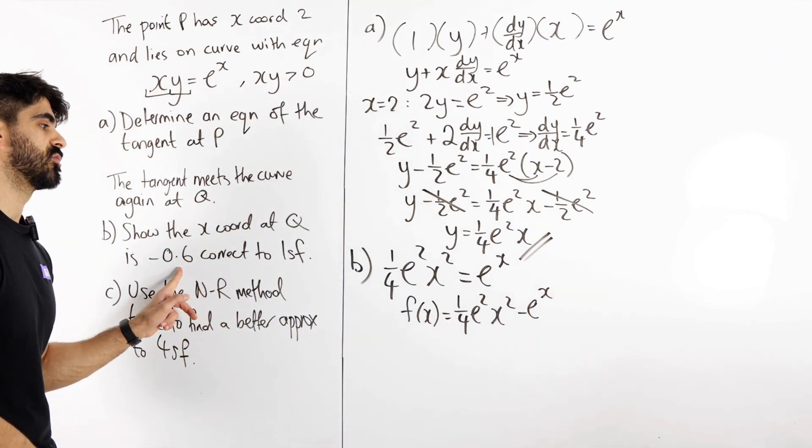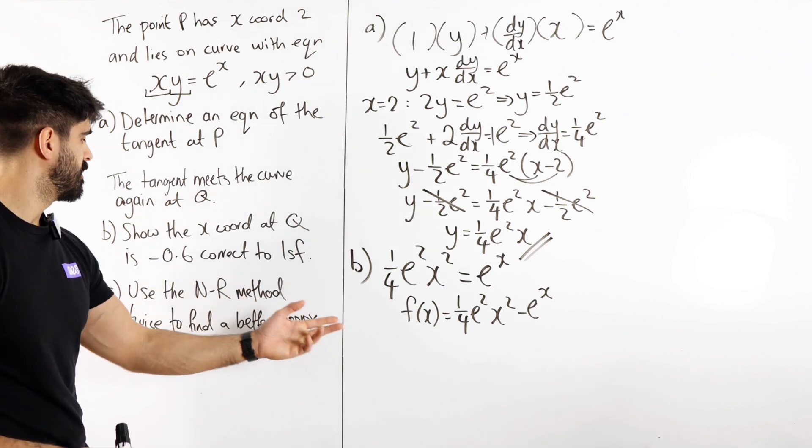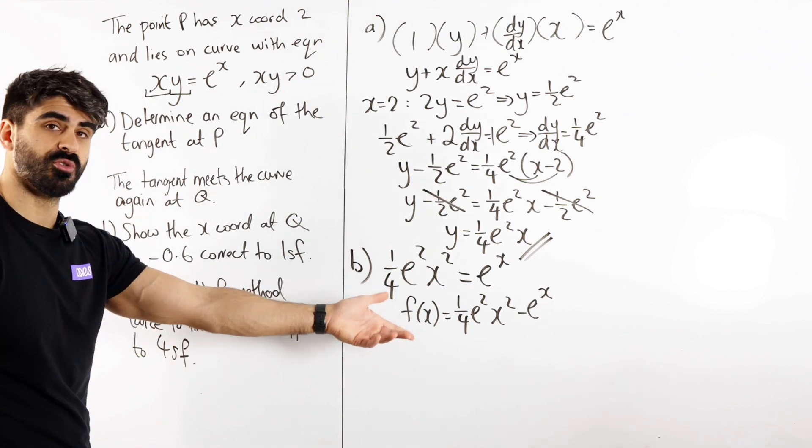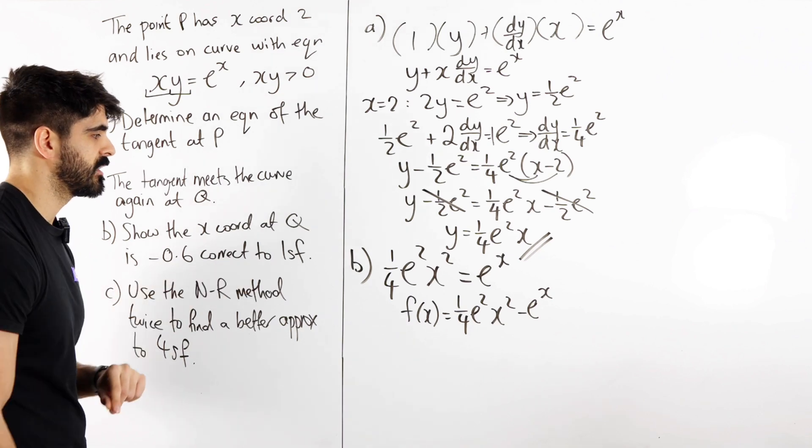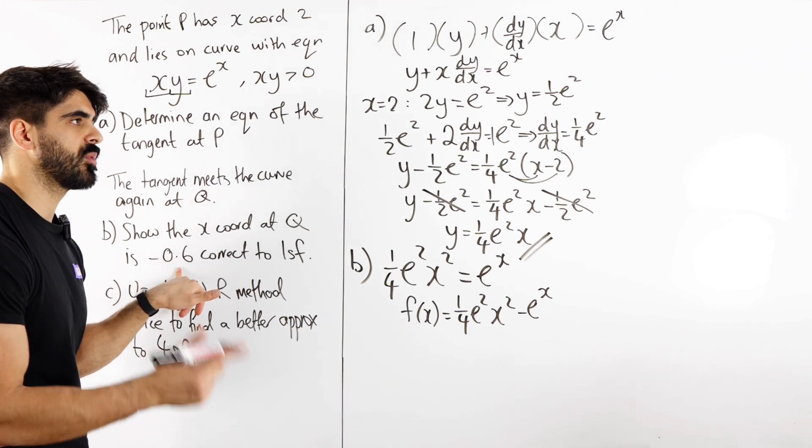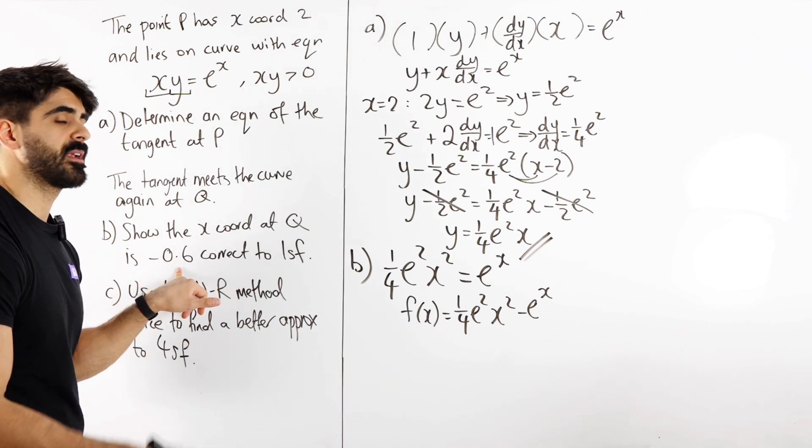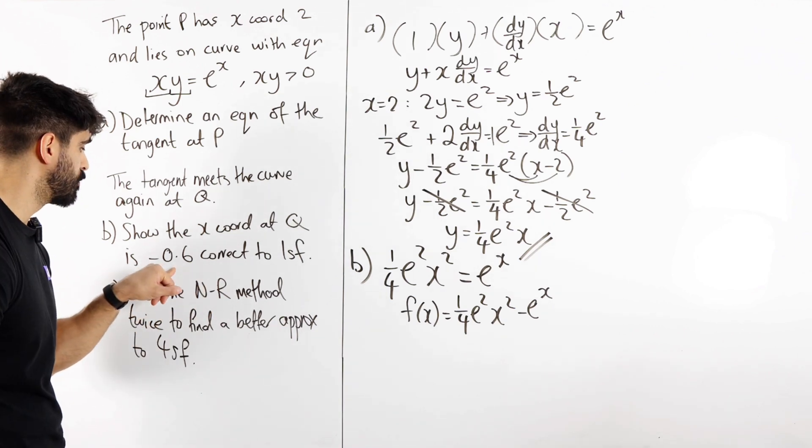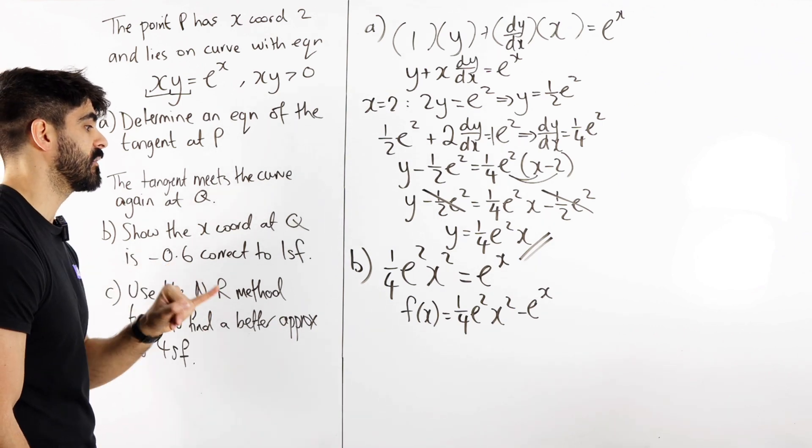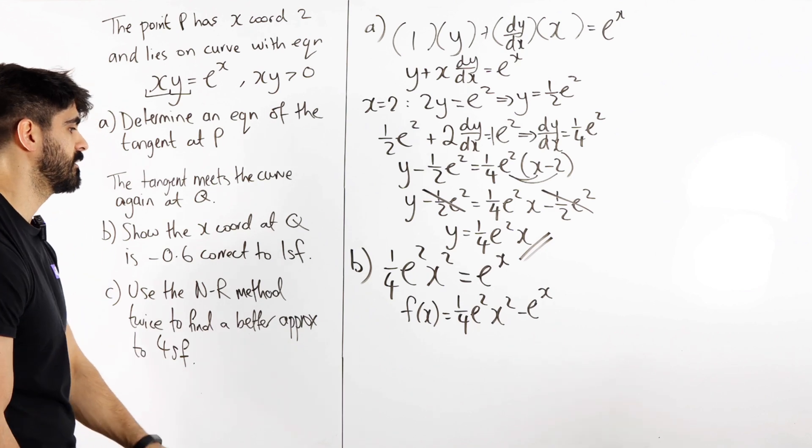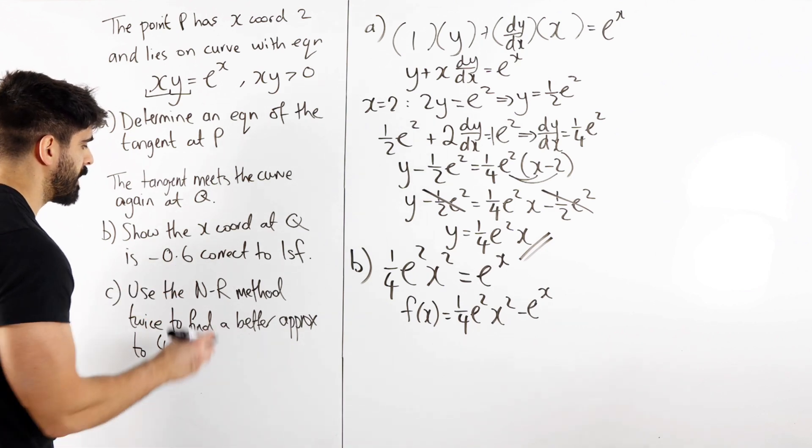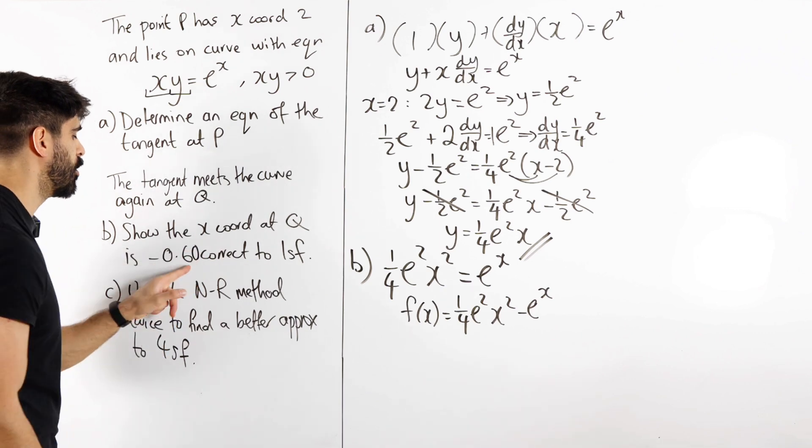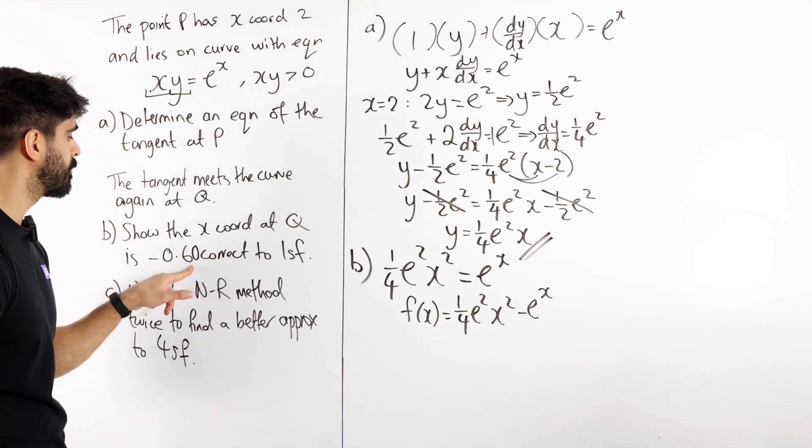Now they're already telling us the solution, so we don't need to show a change in sign between two random values. We need to show that this is correct to 1 significant figure. This is a solution to 1 significant figure. This is reminding me of bounds. You need to prove that all the values that do round to this give us a change in sign. Okay, so they're telling you the answer, we're going to work out the upper and lower bounds. So this is 60, the lower bound will be 55, the upper bound will be 65.